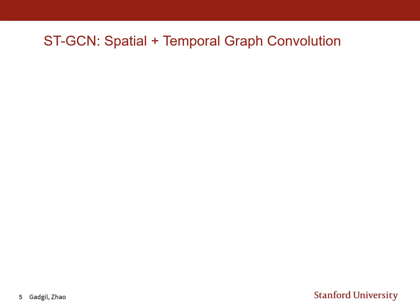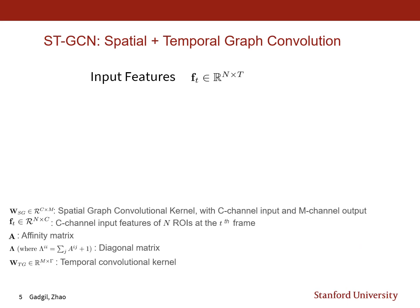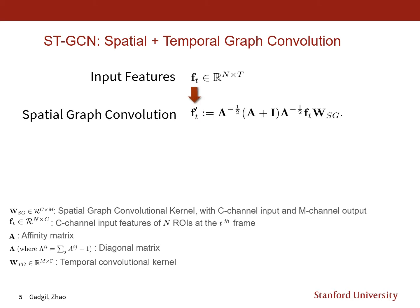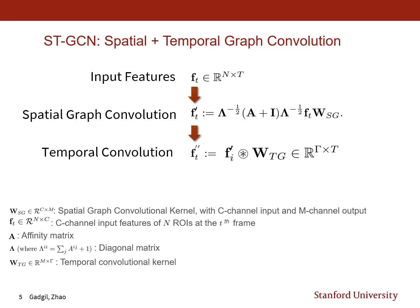The STGCN operation consists of a spatial convolution followed by a temporal graph convolution. We start with a set of input features F sub T, followed by a standard graph convolution with spatial graph convolution kernel W sub SG. The features obtained are fed into a temporal convolution, which is a standard 1D convolution with temporal graph convolution kernel W sub TG. This gives our output features which are then used for the prediction task.